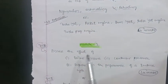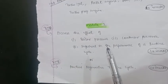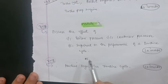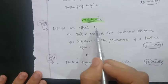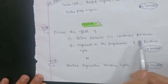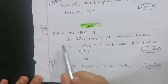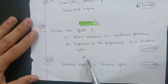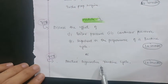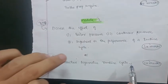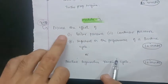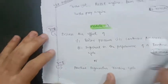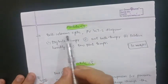In Module 3, go through two questions to cover 10 marks. The most important question is: discuss the effect of boiler pressure, condenser pressure, and superheat on the performance of a Rankine cycle. Alternatively, go through the practical regenerative Rankine cycle. The first question on Rankine cycle effects is preferred and carries 10 marks.